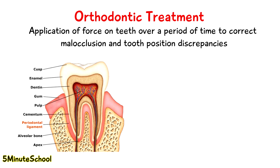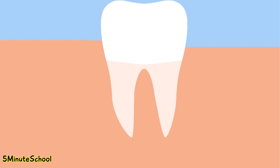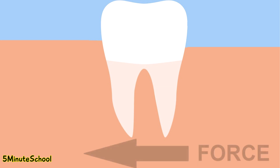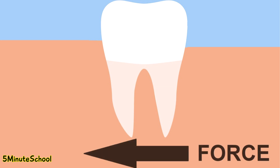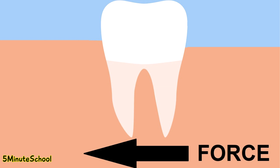If pressure is applied in one direction on the tooth, it's unable to move immediately because the bone is in the way. It may move very, very slightly just because of the natural leeway this periodontal ligament gives, but you're not going to be able to move the tooth to a new position just by pressing it a little bit, because it's mostly well supported by the bone.